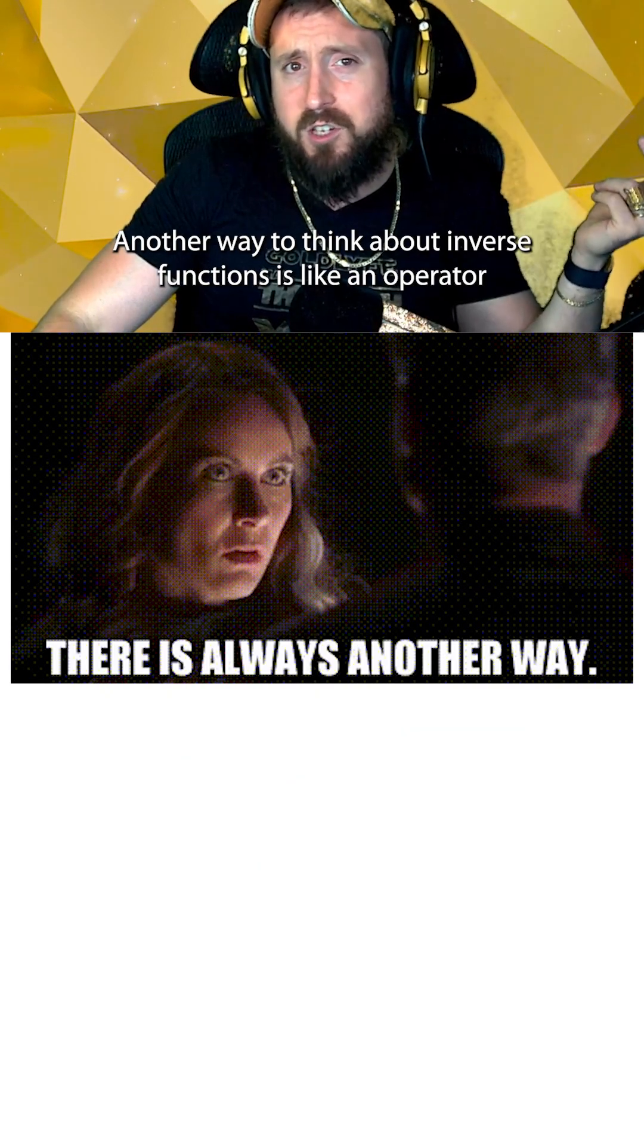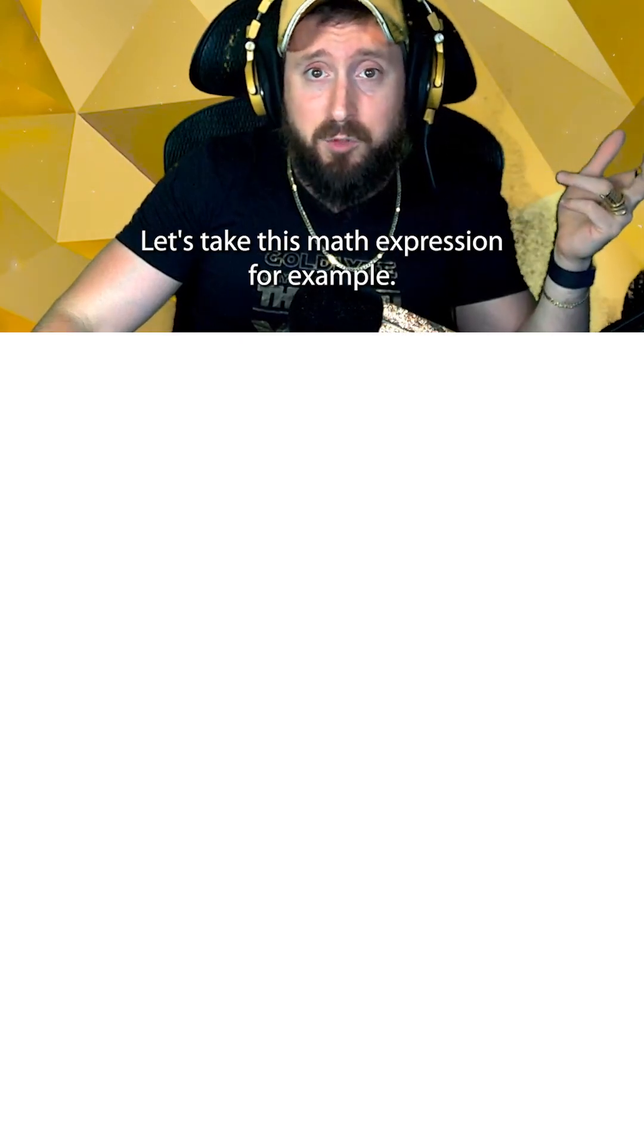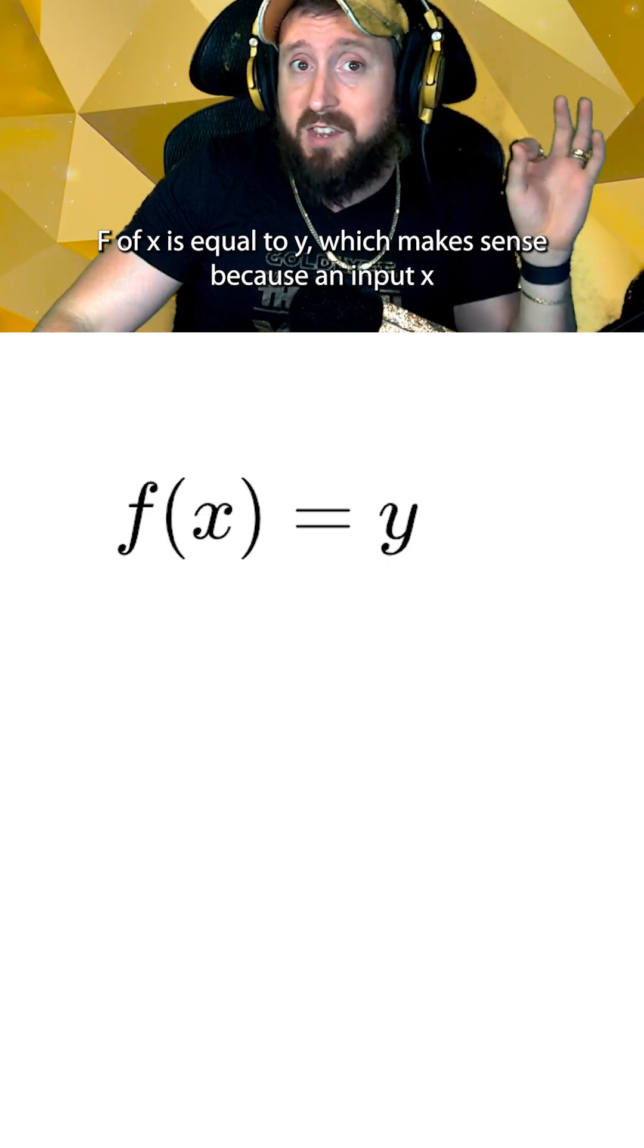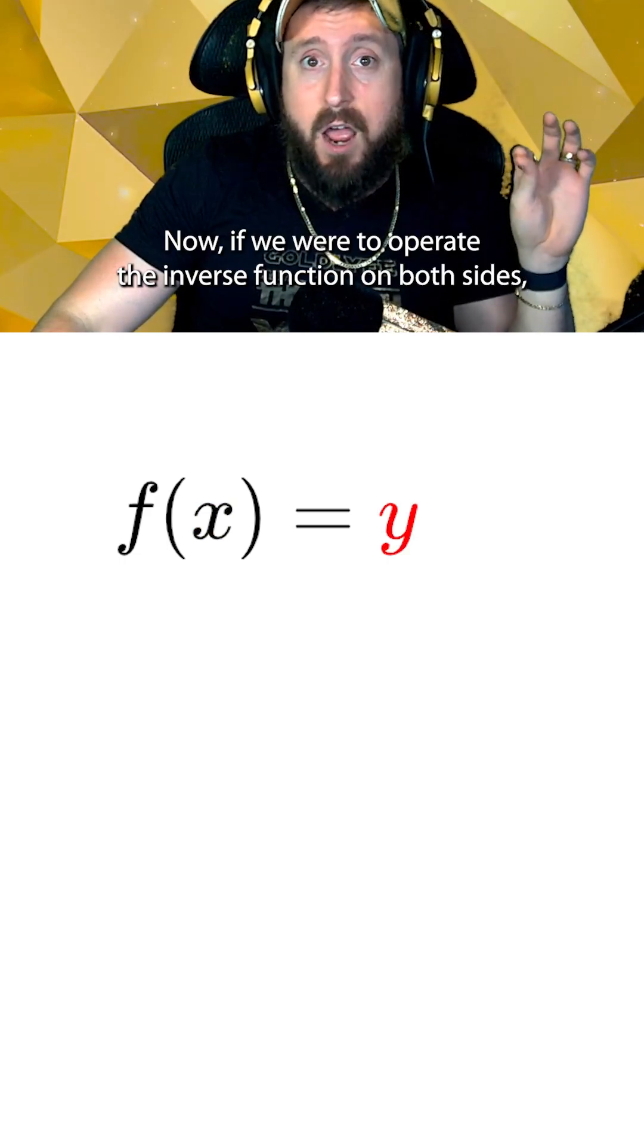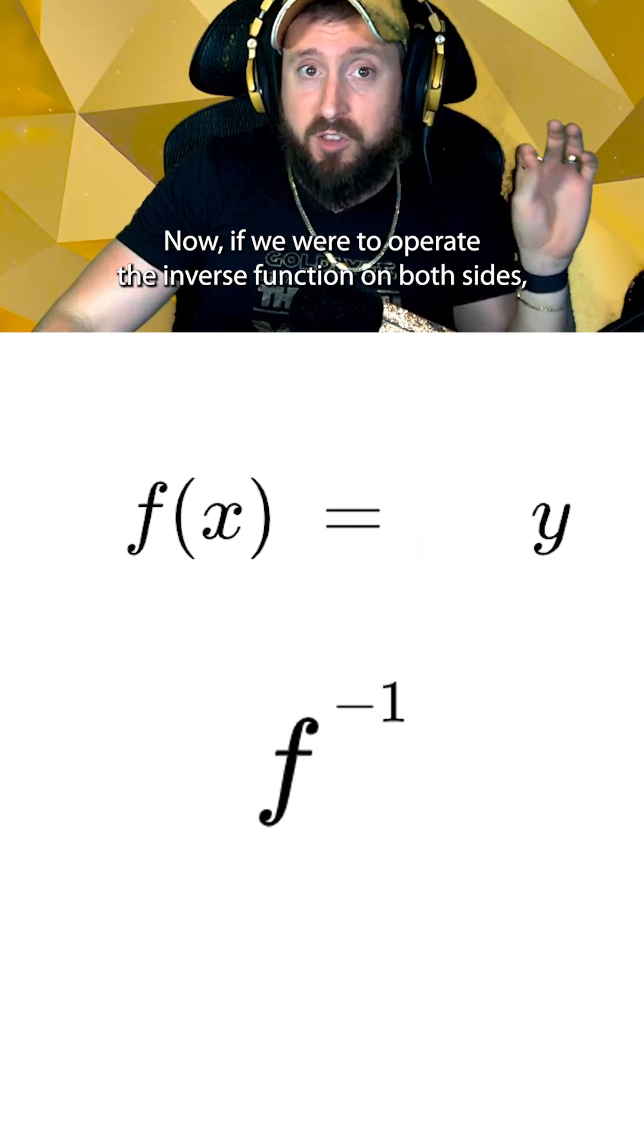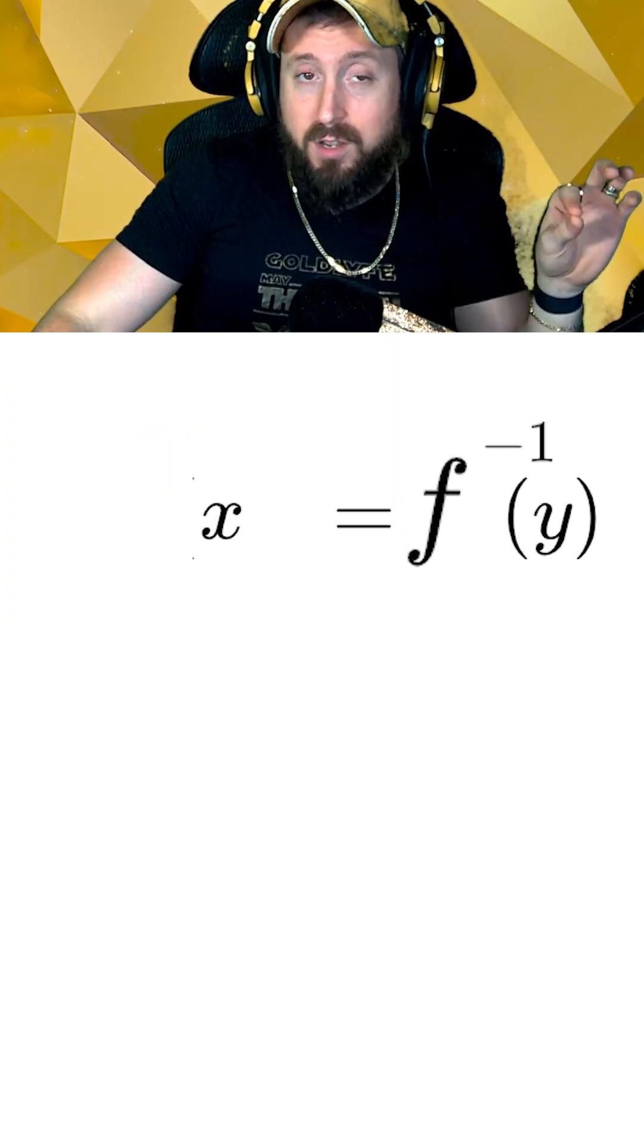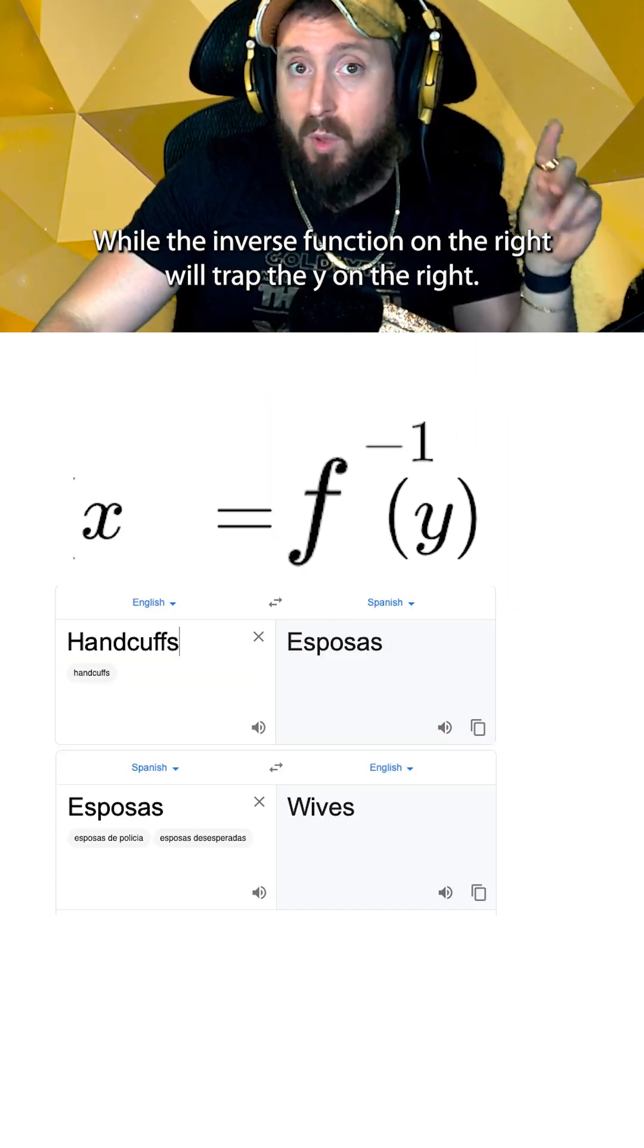Another way to think about inverse functions is like an operator that cancels out regular functions. Let's take this math expression for example, f of x is equal to y, which makes sense because an input x to the regular function f of x produces an output y. Now, if we were to operate the inverse function on both sides, the inverse function on the left will cancel out the regular function to free the x on the left, while the inverse function on the right will trap the y on the right.